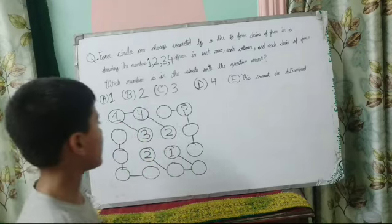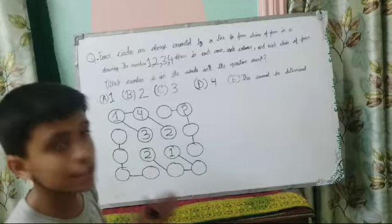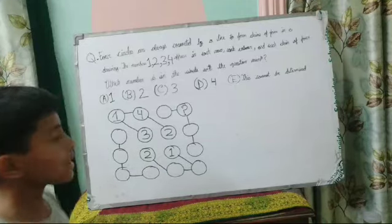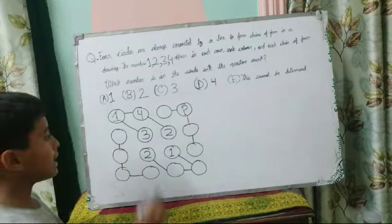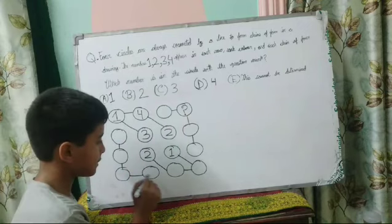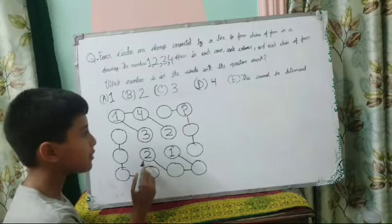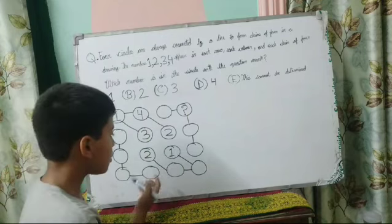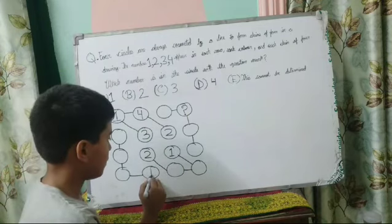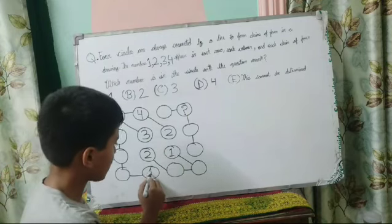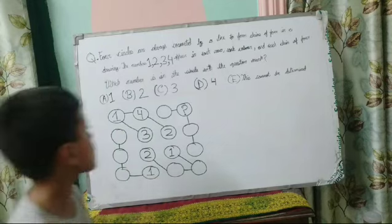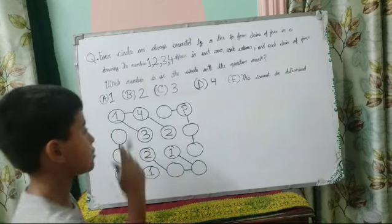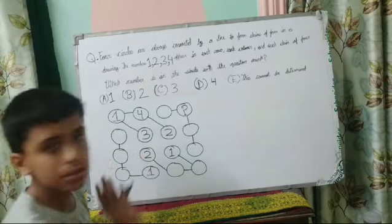Can you find another circle which is a definite circle? Yes, you are correct — it is this circle. 4, 3, and 2 are already occupied in this column, so 1 can only come in this column. Now this column is also solved.